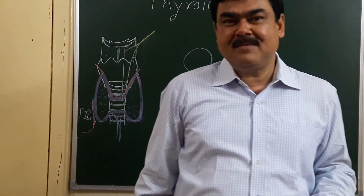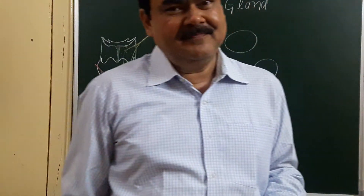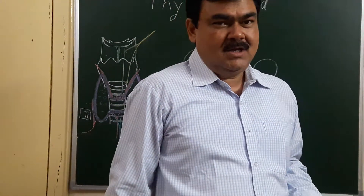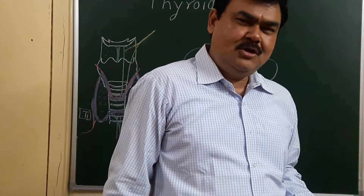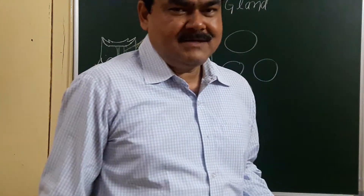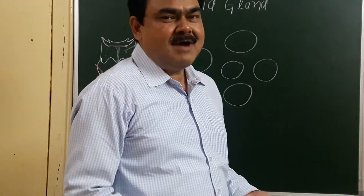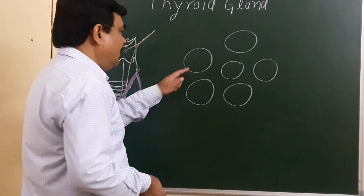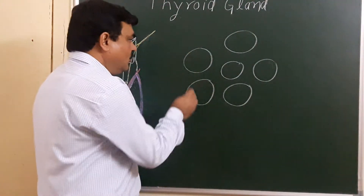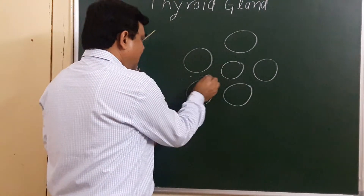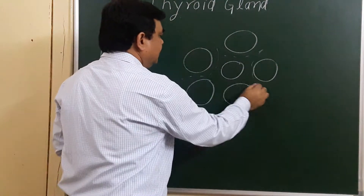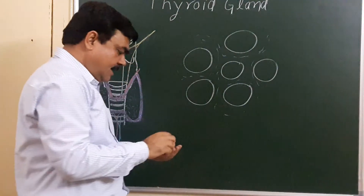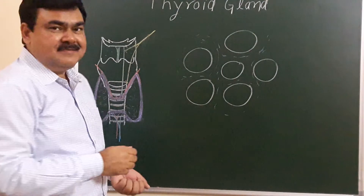Now we will discuss the histology of the thyroid gland. The thyroid gland has a capsule, from which numerous fibrous tissue passes into the substance of the thyroid gland and divides it into small lobules. The lobule is fibrous connective tissue and it has two types of cells.